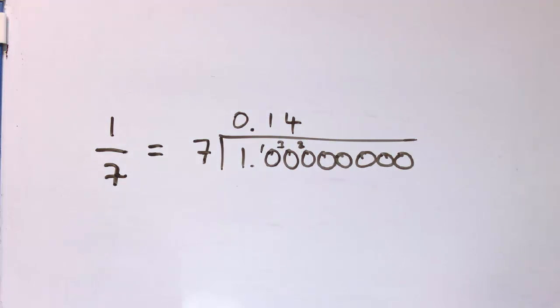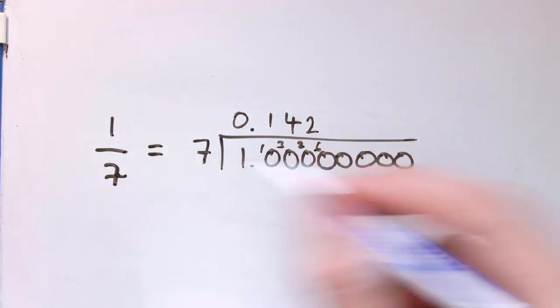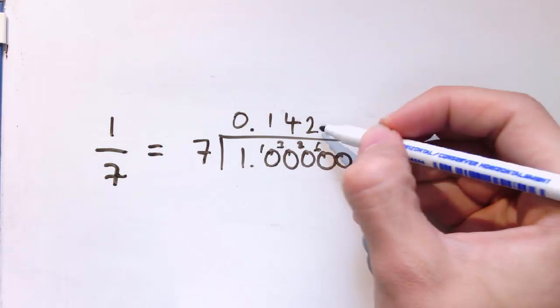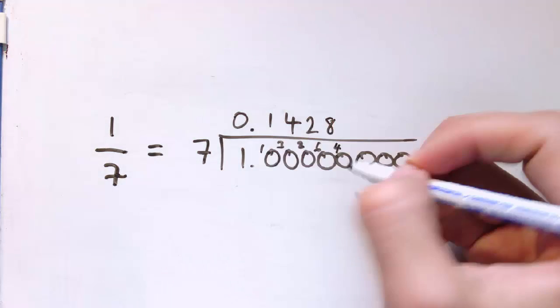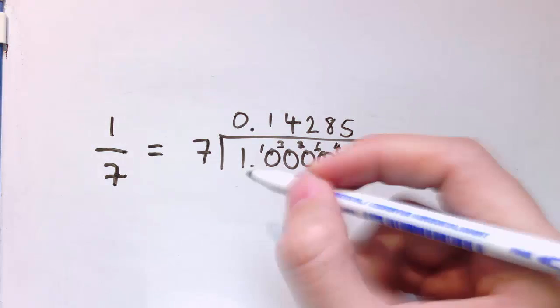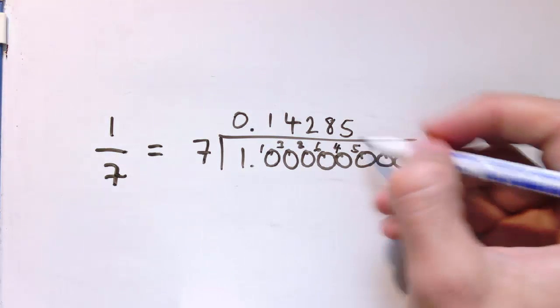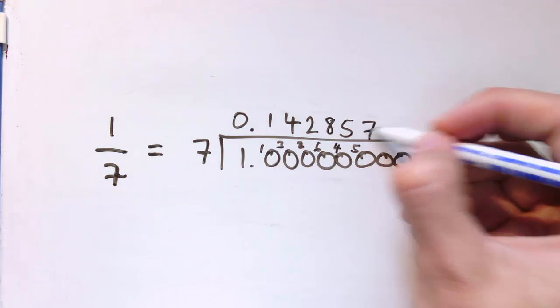7 into 20, that's 2 with 6 left over. 7 into 60, 8 into 7 is 56, so that's 8 with 4 left over. 7 times 5 is 35, so 5 with 5 left over. 7 into 50, go 7 times with 1 left over.